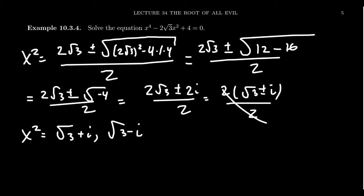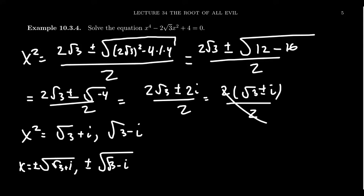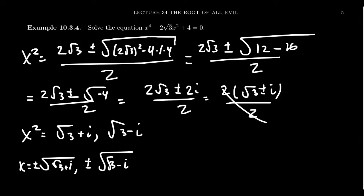The quadratic formula turned out to be super helpful, but we haven't solved the equation yet. We have x squared equals root 3 plus or minus i, so we have to then take the square root of these things. We get x equals plus or minus the square root of root 3 plus i, and plus or minus the square root of root 3 minus i. We have to compute these square roots of the complex numbers.